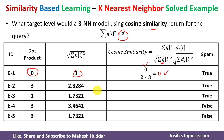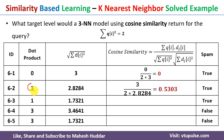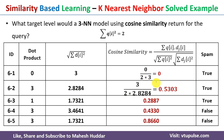For the second example, the dot product is 3, qi squared is again 2, and dj squared is 2.8284. Solving this gives the cosine similarity for example 2. We calculate the remaining three values similarly, and once solved we get all five similarity scores.